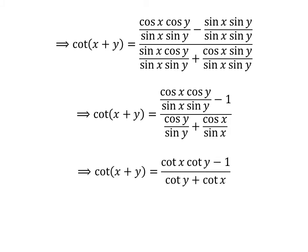As we know, cosine of x upon sine of x is cotangent of x and cosine of y upon sine of y is cotangent of y, so cotangent of x plus y is equal to cotangent of x times cotangent of y minus 1 upon cotangent of y plus cotangent of x.